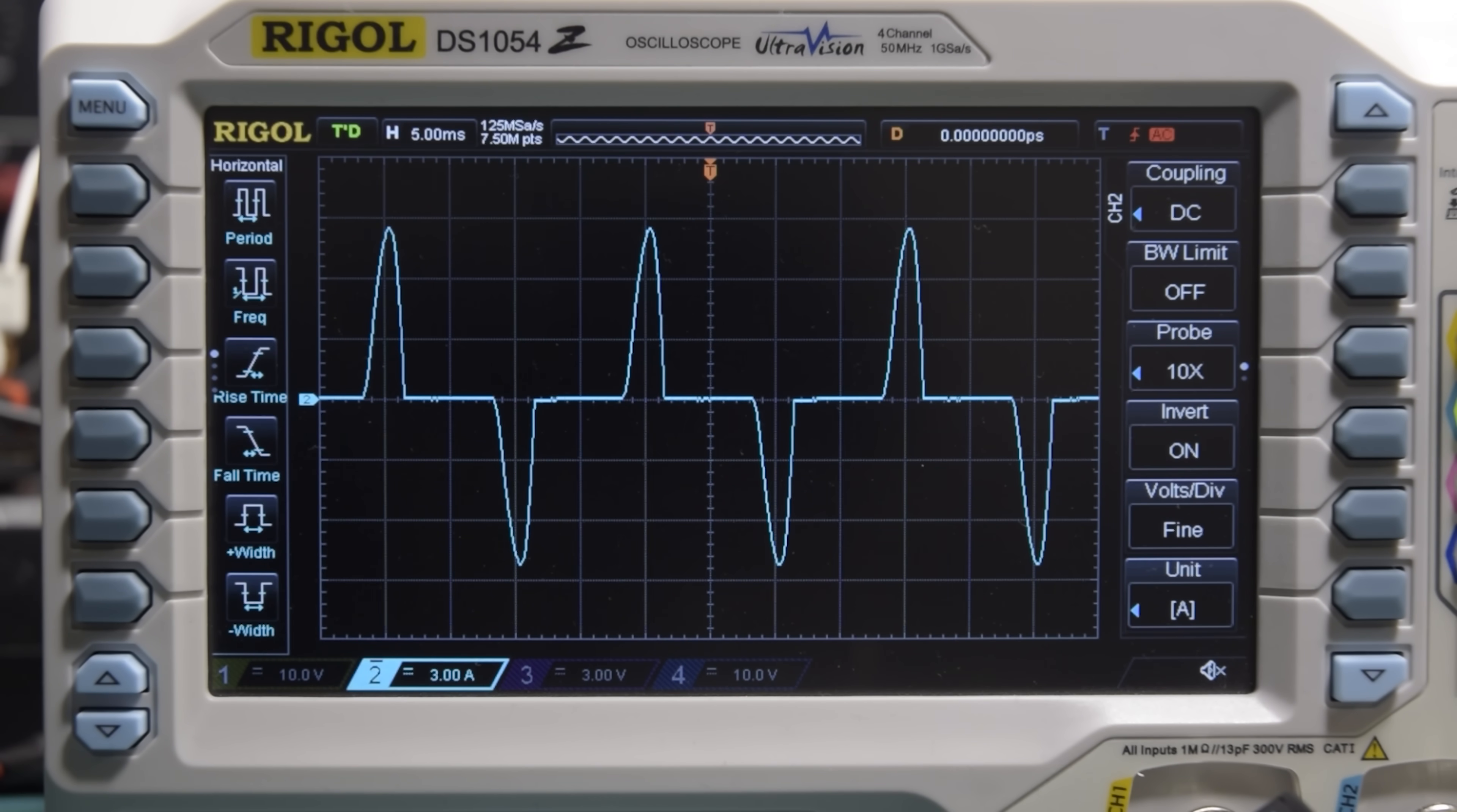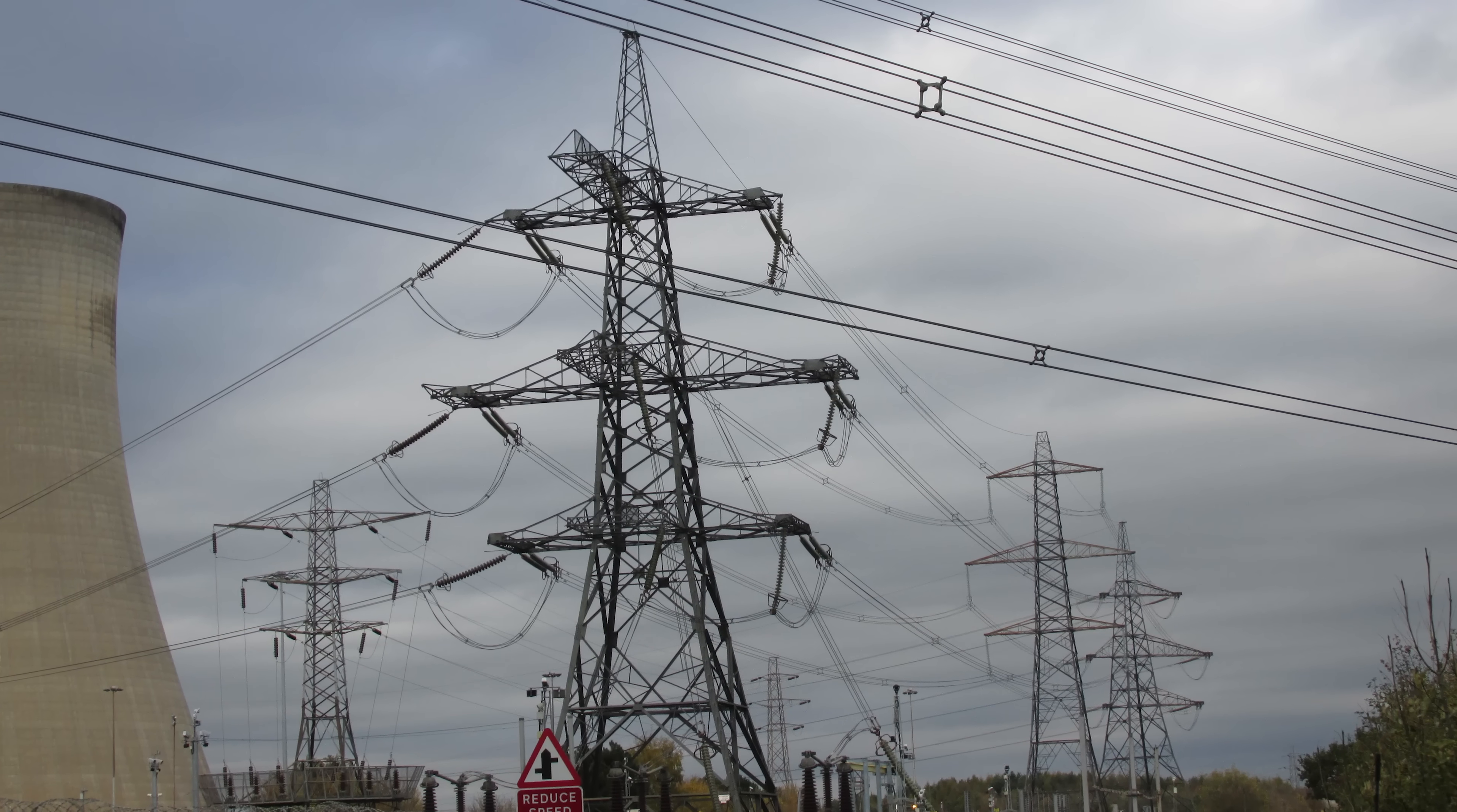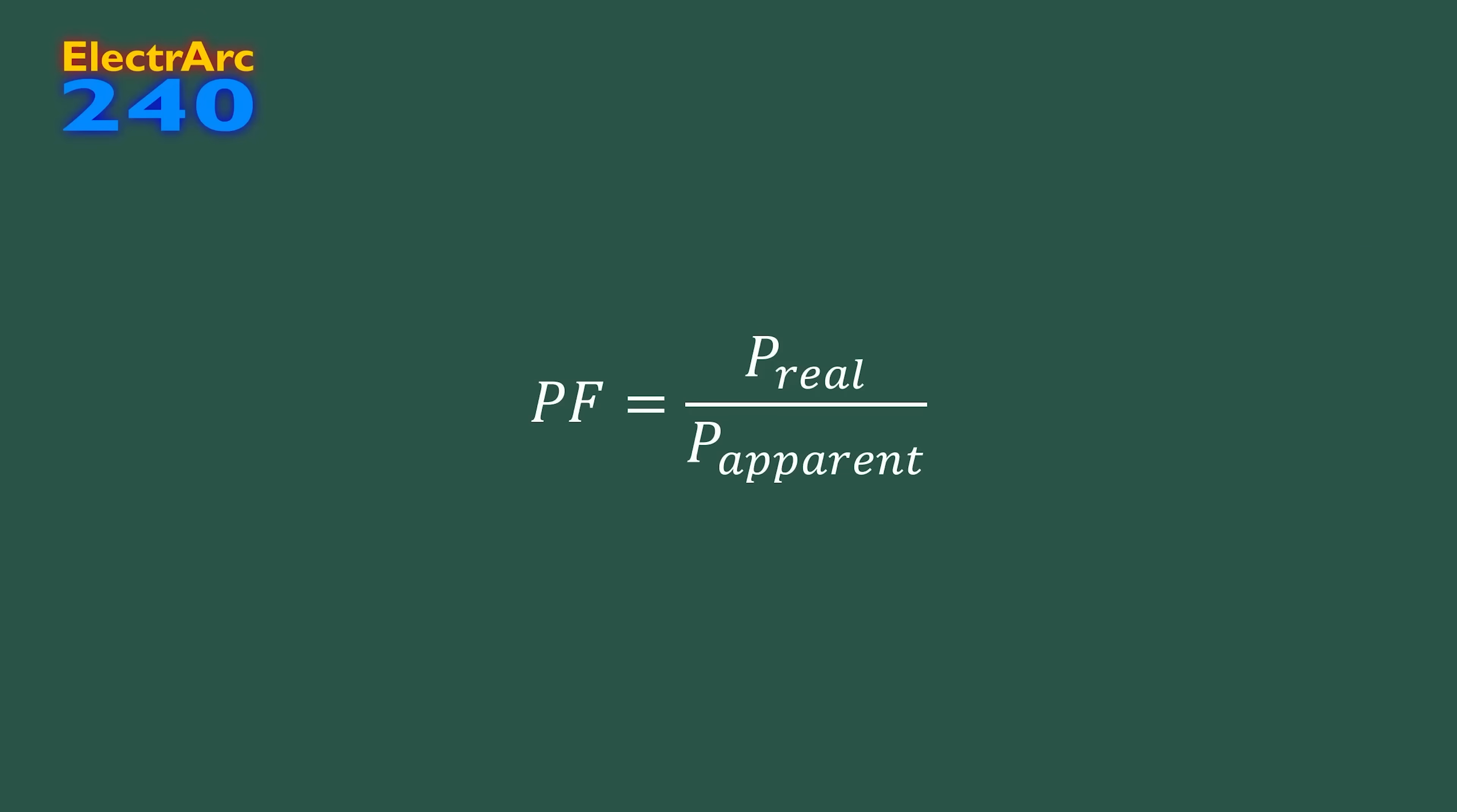This very peaky current draw results in poor power factor, which is a measure of how nice a load is from the point of view of the supply, usually the power grid. Power factor is calculated by dividing the real power drawn by a load by its apparent power, which may sound complicated, but I promise it's actually really simple.